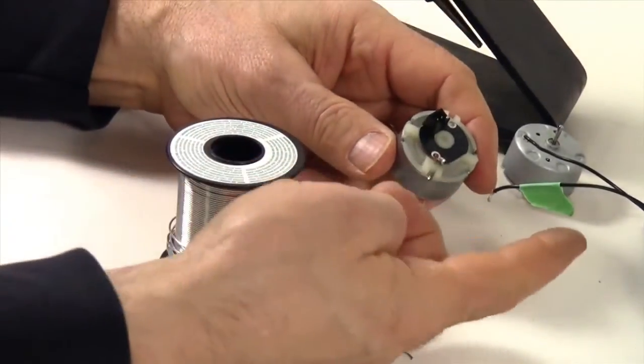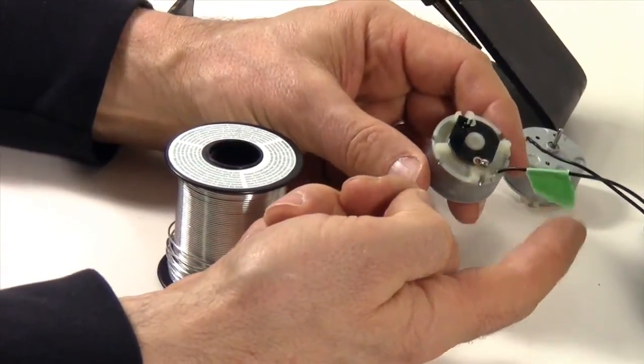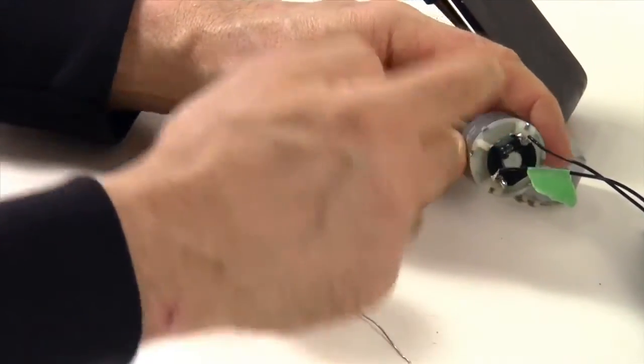So what we're going to do is solder the wire with the green tape onto that terminal. And this wire gets soldered onto that terminal.